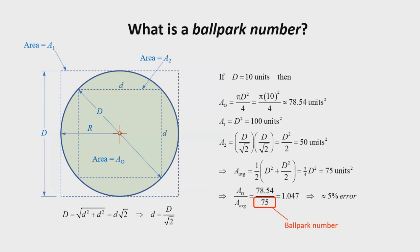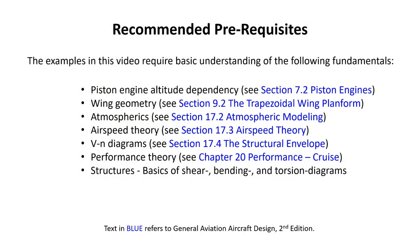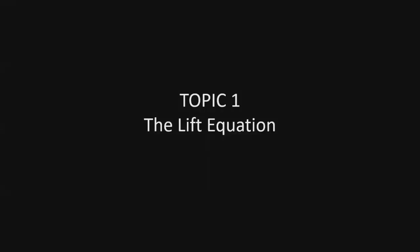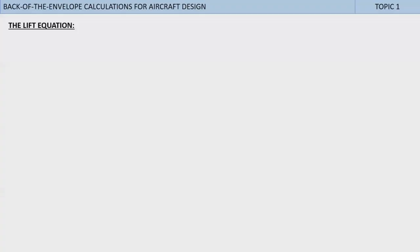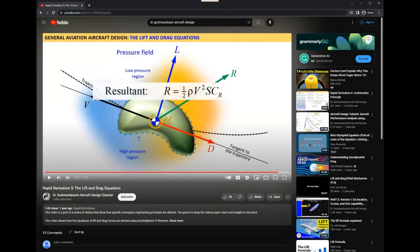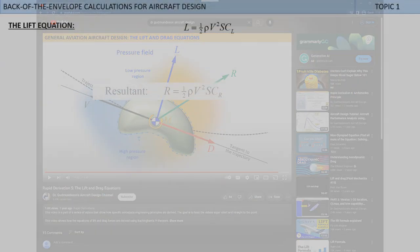Now let's dive into examples of back-of-the-envelope calculations that focus on aircraft design. Topic 1: The lift equation. The lift equation is well known to many, even outside the circles of aviation. While engineering students entering my classes are well familiar with the expression, many appear in the dark about its real power. They are not entirely to blame, and I will leave it at that. Anyway, I derived the lift equation in my video Rapid Derivation 5: The Lift and Drag Equations.